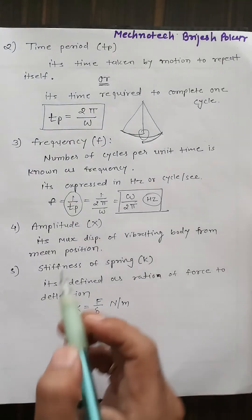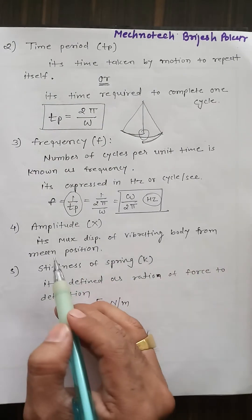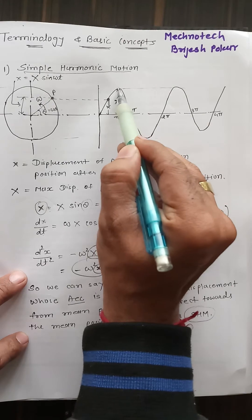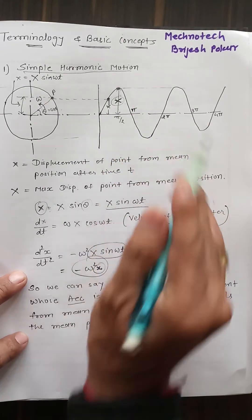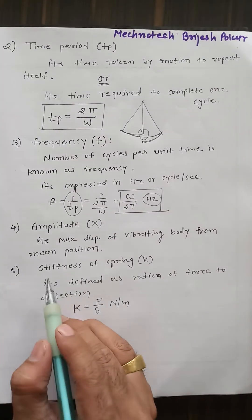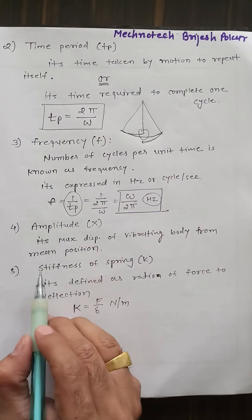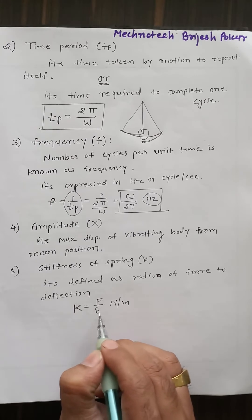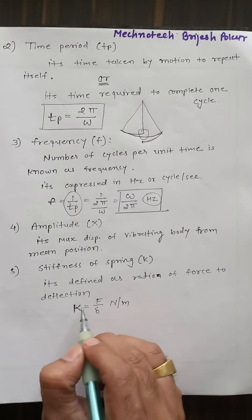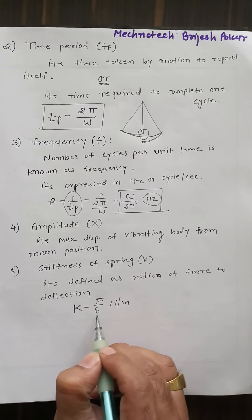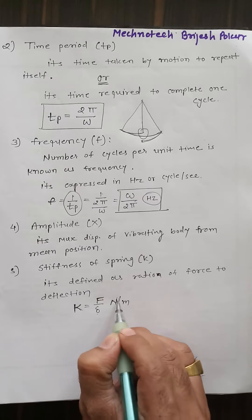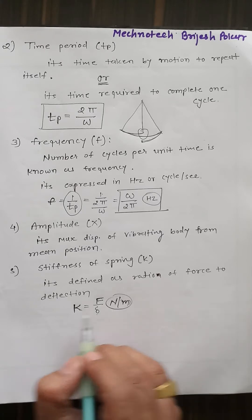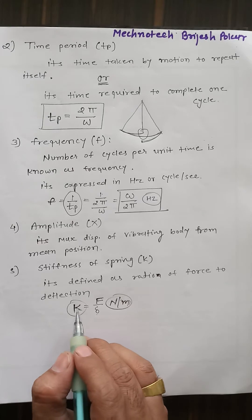Amplitude X is the maximum displacement of a vibrating body from its mean position. Next is stiffness of a spring, k. Stiffness k equals force divided by deflection, so it is the ratio of force to deflection. The unit of k is newton per meter (N/m). Stiffness k is a very important term in vibration.